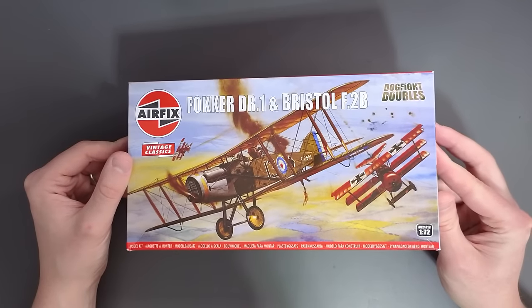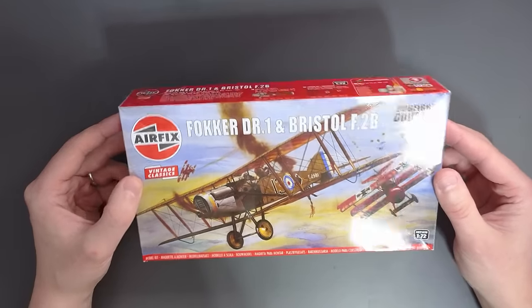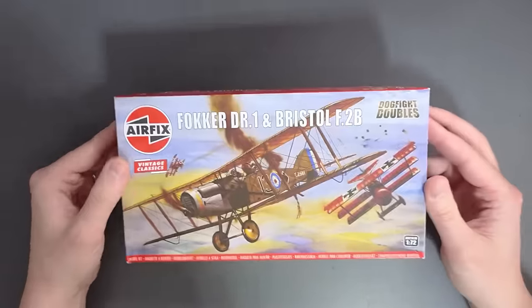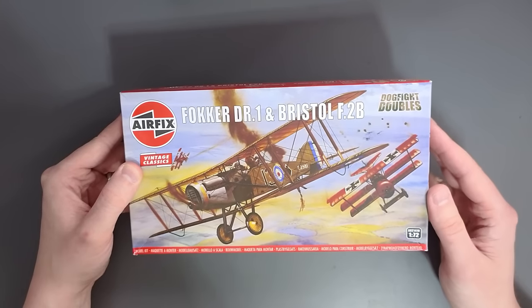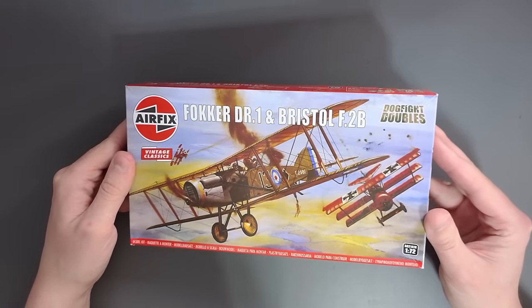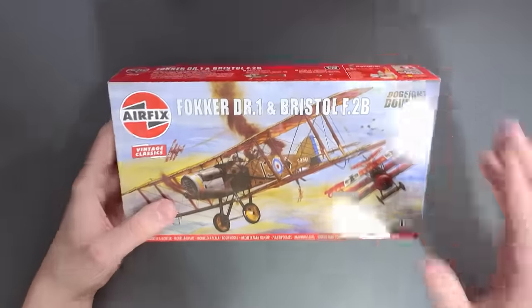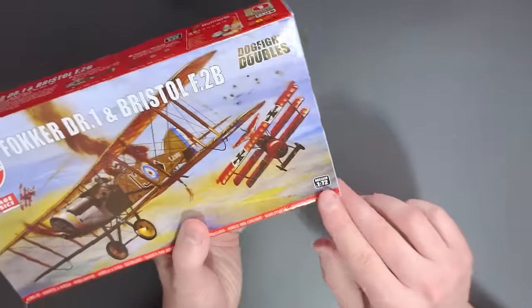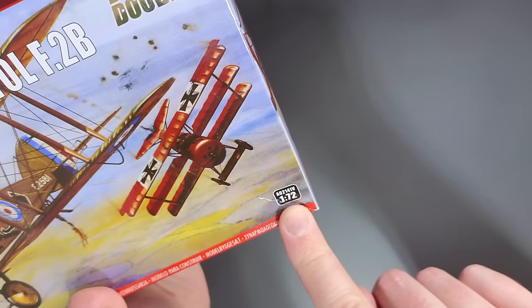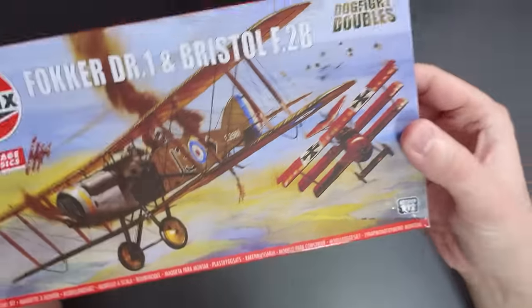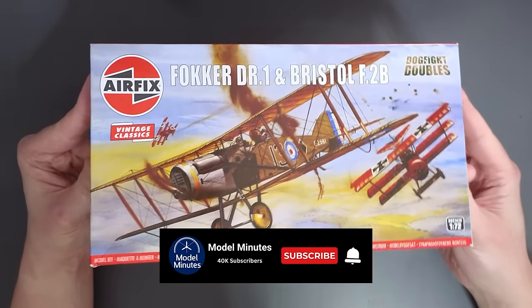Starting off on the front of the box we've got this very exciting image, which was drawn by Roy Cross, featuring the Bristol F2B and the Fokker DR1 in combat somewhere over France. Up here it tells us it's a dogfight double, so you've got two planes in this set, and down here we have an item code, A02141V, V for vintage. It's 1/72nd scale and it's part of the vintage classics range.